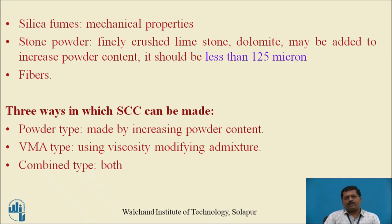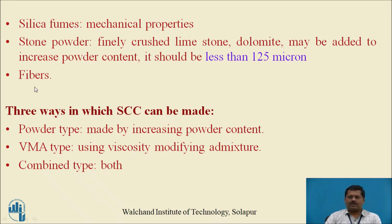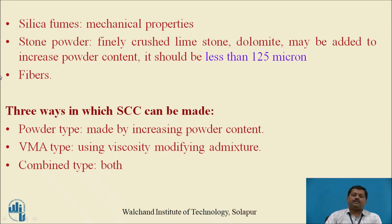How can self-compacting concrete be made? There are three methods. First, you can increase the powder content using cementitious material. Second, you can improve the viscosity by adding viscosity modifying admixtures to get proper flow. Third, you can combine both methods — increase the powder content as well as improve the viscosity.